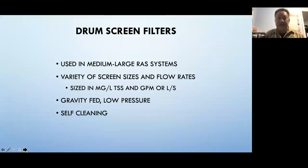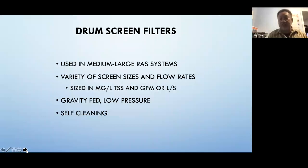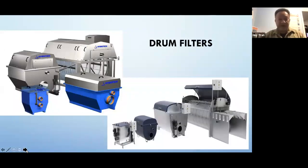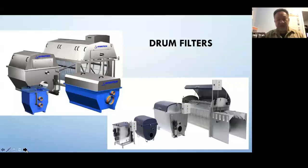The drum screen filter is probably the most common used in medium to large RAS systems. A variety of screen sizes and flow rates are available; it's usually sized in milligrams per liter of total dissolved solids and gallons or liters per second. It's gravity-fed, low pressure, and self-cleaning — removing waste as it enters the filter rather than trapping it. Stick with major brands, because technical and product support is much better.